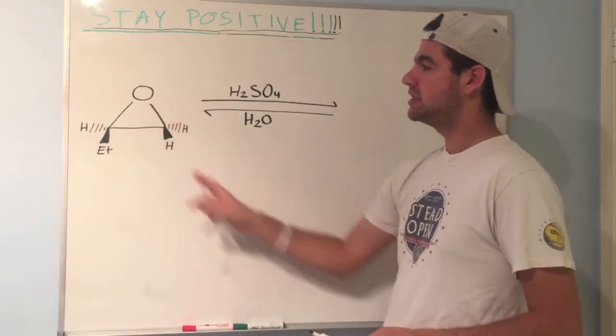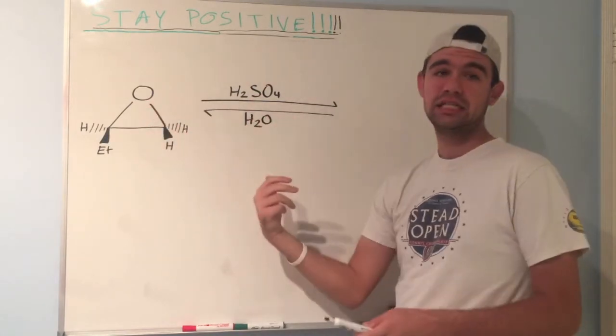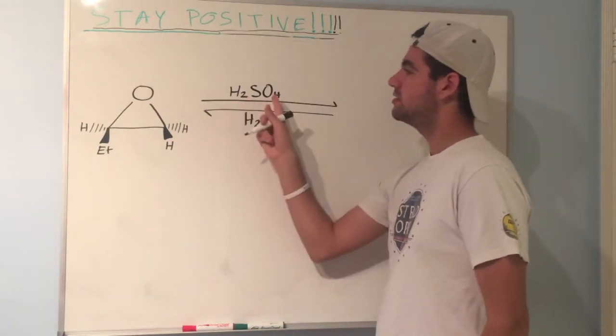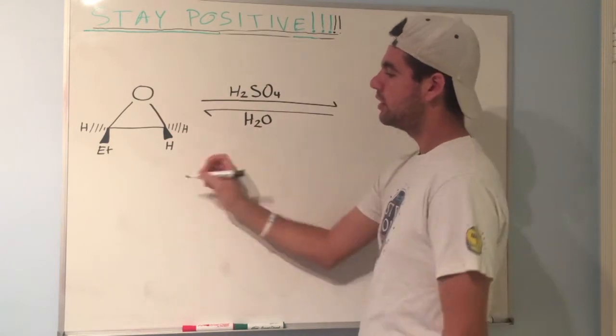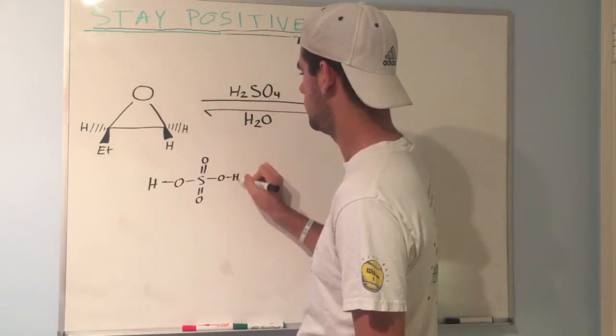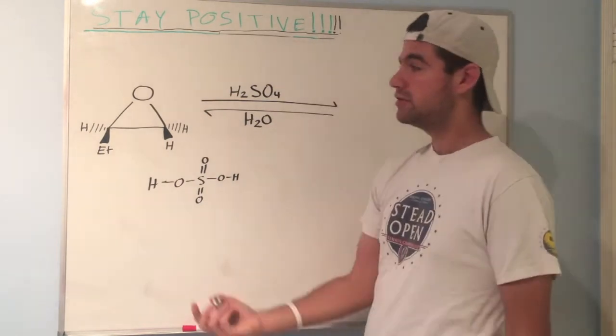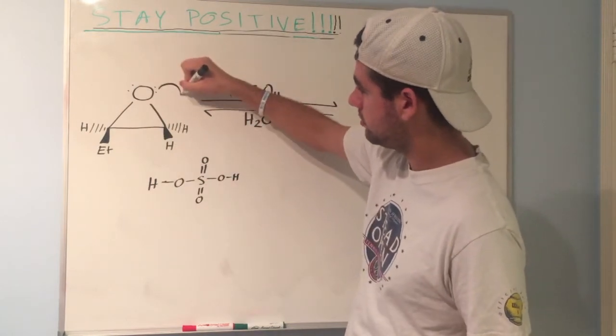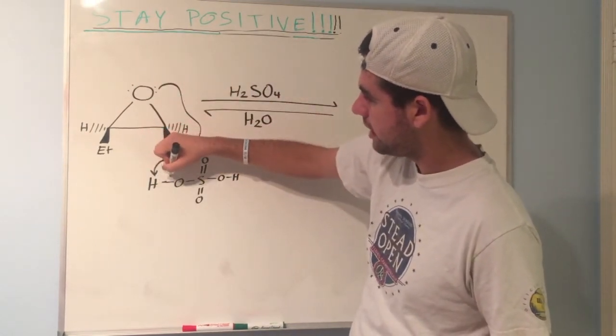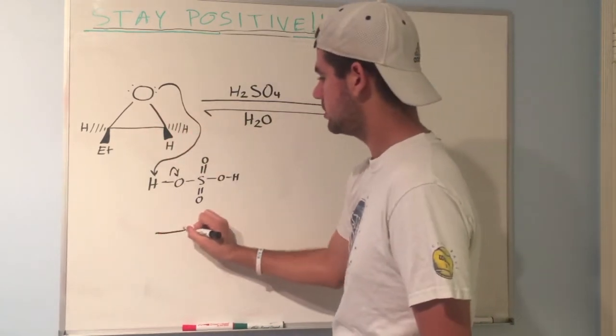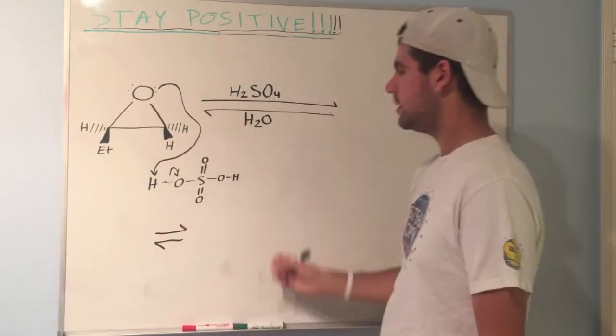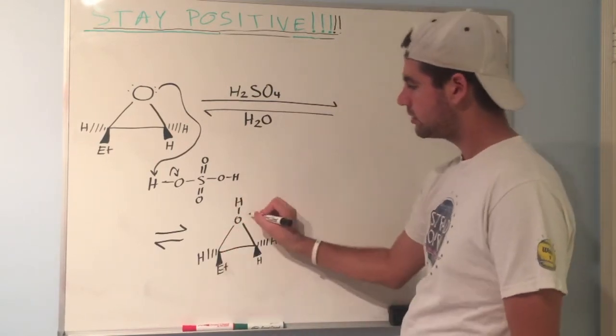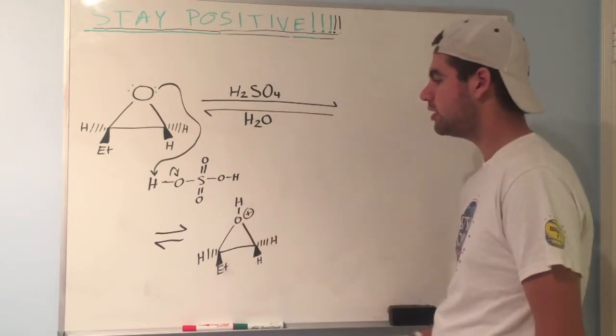Right off the bat, we see an epoxide with some stereochemistry and an acid. First thing we think is acid-catalyzed ring opening. We have sulfuric acid H2SO4 right here. Let's draw that out. The first thing that happens in acid-catalyzed ring opening is the oxygen of the epoxide becomes protonated by the acid. That's double arrows because it's acid-base chemistry. We end up with a protonated epoxide.